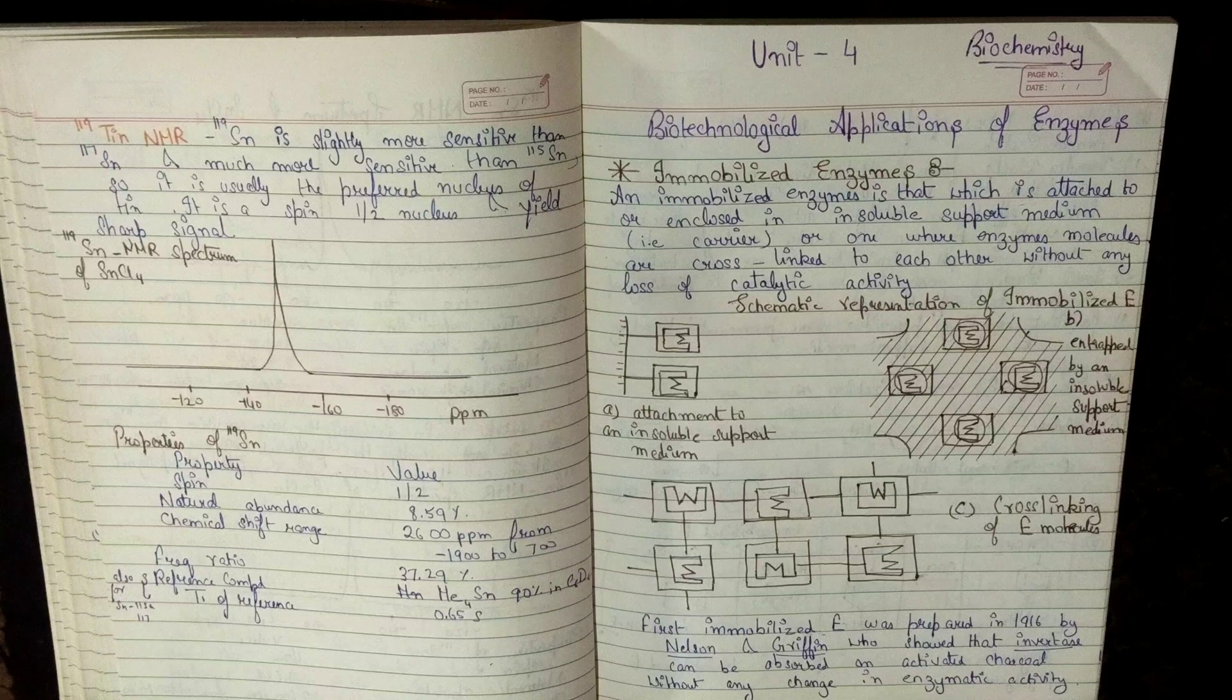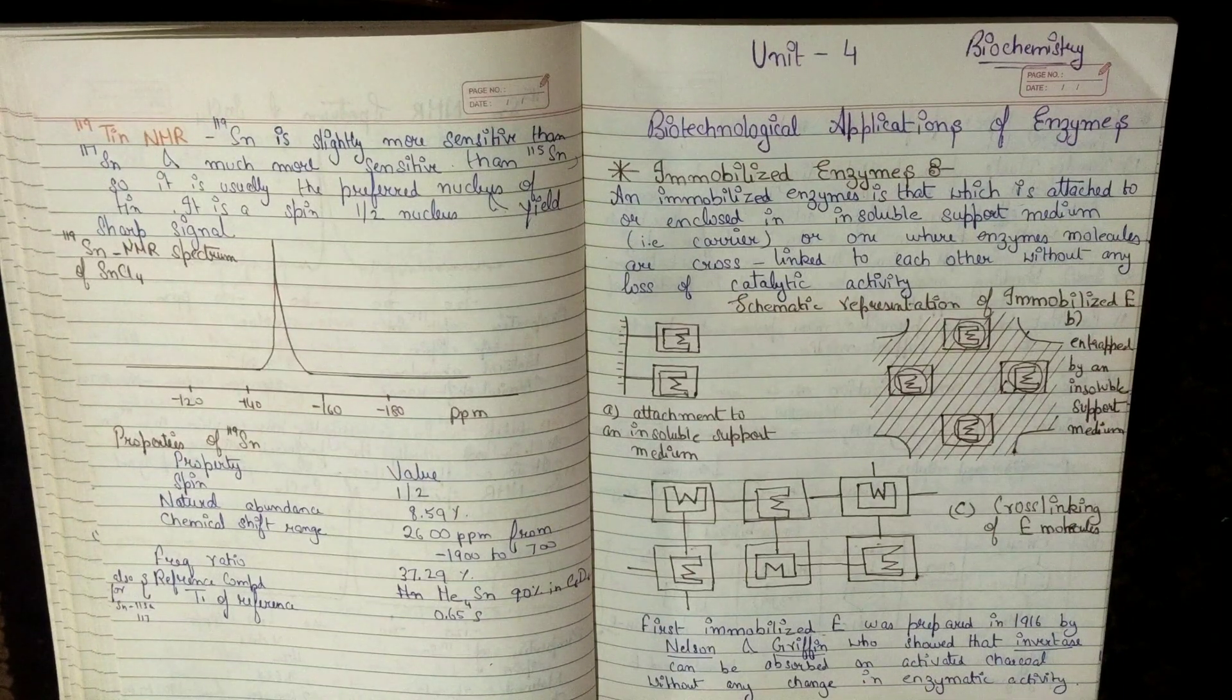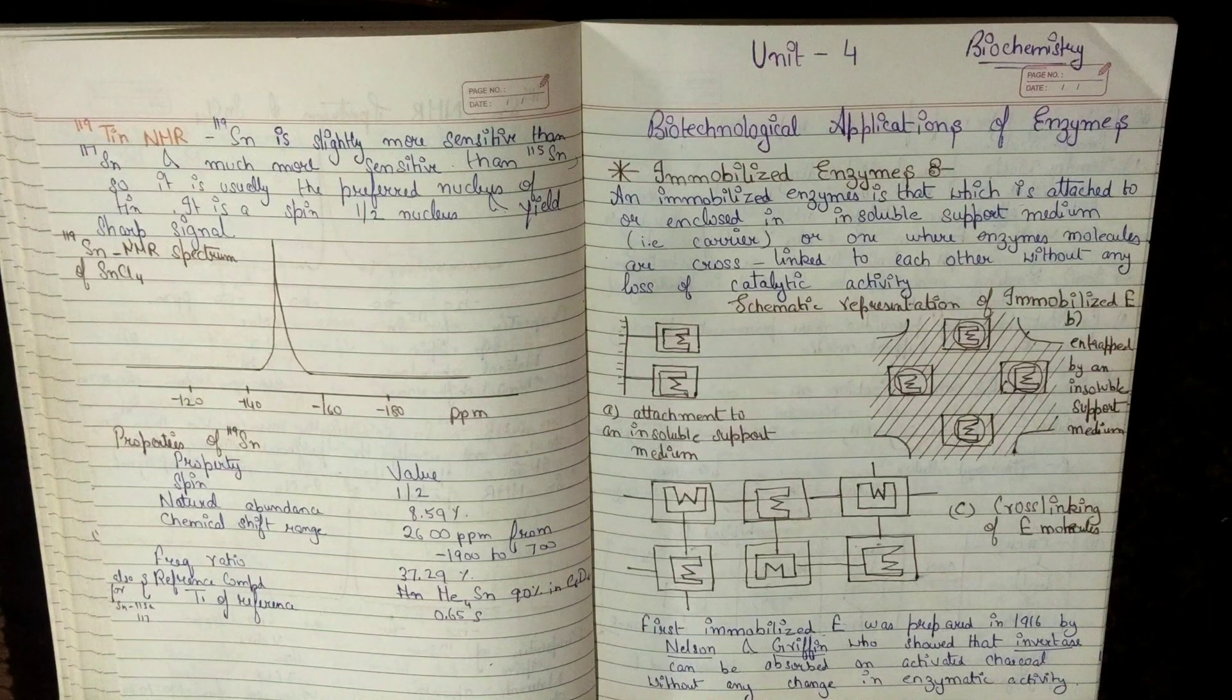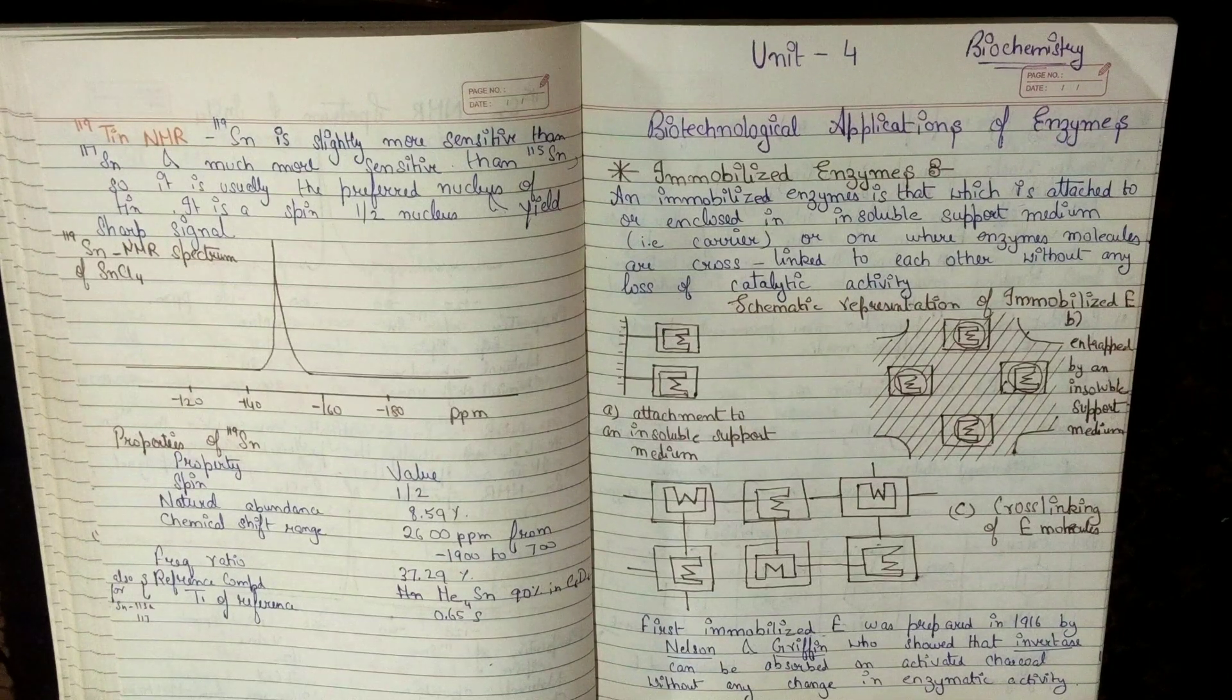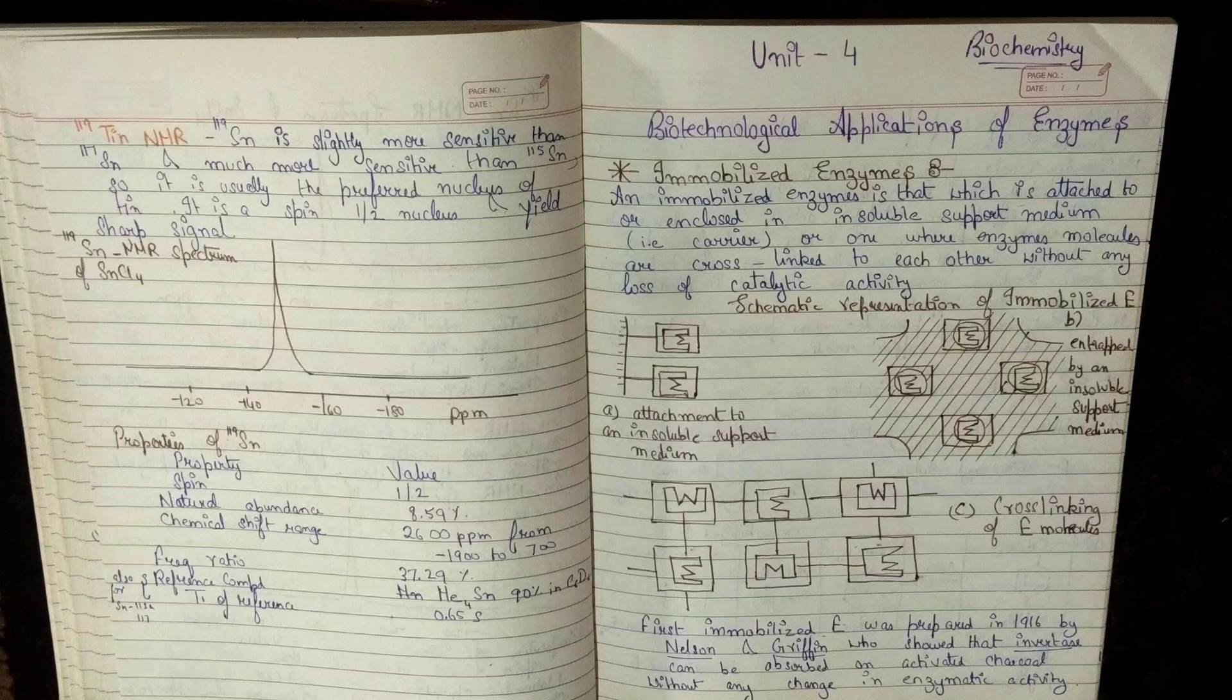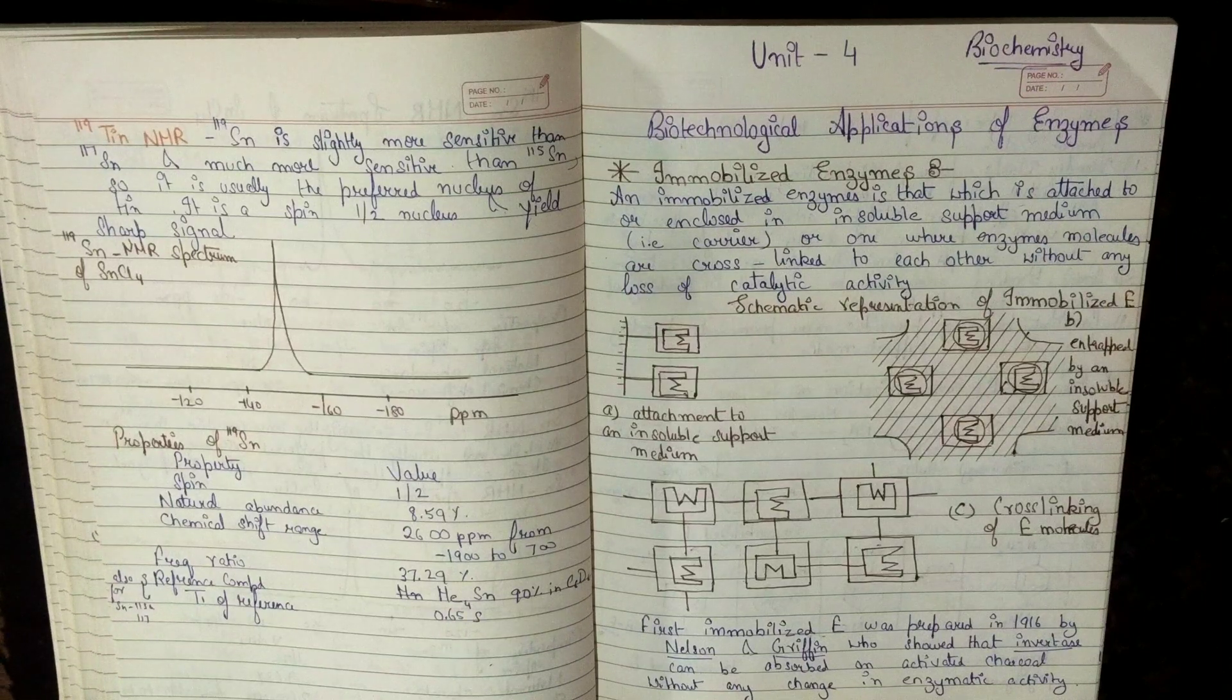First immobilized enzyme was prepared in 1916 by Nelson and Griffin, who showed that invertase can be absorbed on activated charcoal without any change in enzymatic activity. हमारा पहला immobilized enzyme, Nelson और Griffin ने प्रिपेर किया था 1916 में. उन्होंने शो किया के invertase easily absorbed हो जाता है activated charcoal पर और यह अपनी enzymatic activity यानि अपनी catalytic activity को भी नहीं loose करता है.